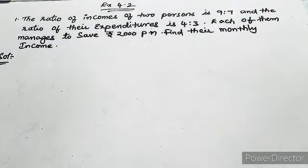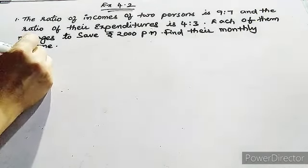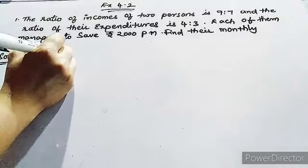So what we have to find? We have to find the monthly income. Let two persons be A and B.